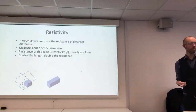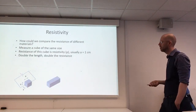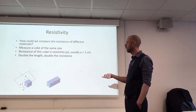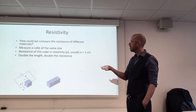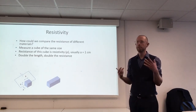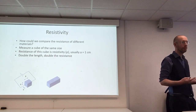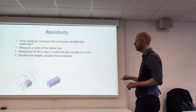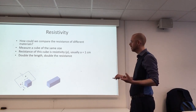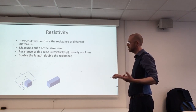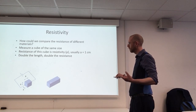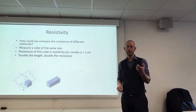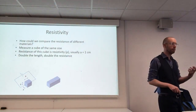Now if we imagine we've got this cube and we stack two cubes end-on-end — so we double its length — the resistance of that combination will be double. Electrons trying to go through have to travel through this first centimetre of material, and then through another centimetre of material. So doubling the length will double the resistance.